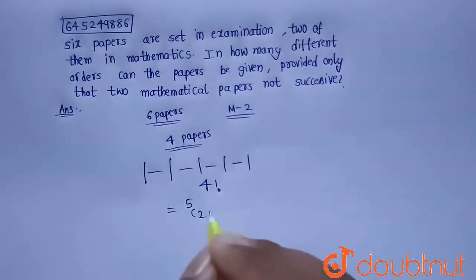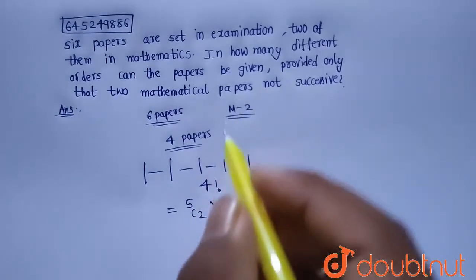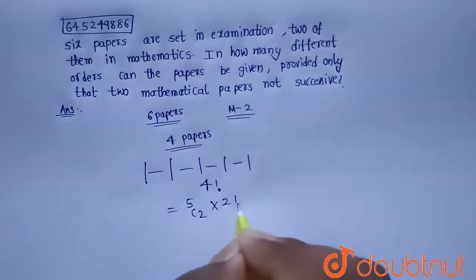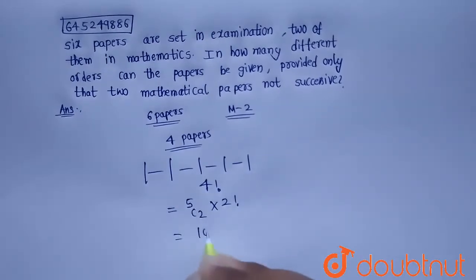And we are considering that mathematics papers are different. The number of ways to place that will be 2 factorial. The arrangement will be 2 factorial, so that is nothing but 10 into 2 factorial, because 5C2 is 10, so that will be equals to 20.